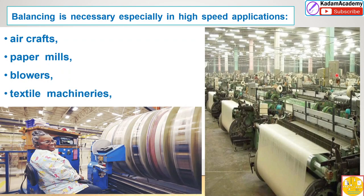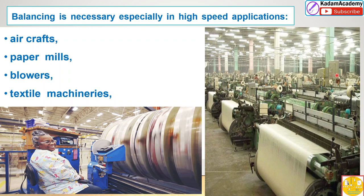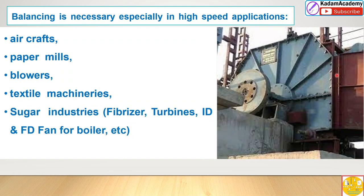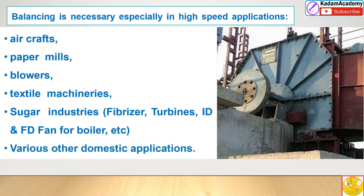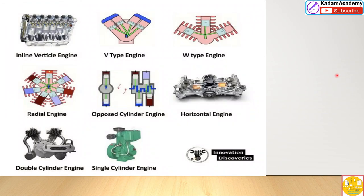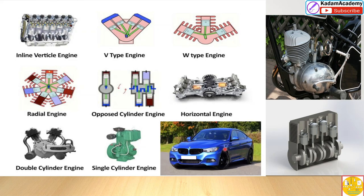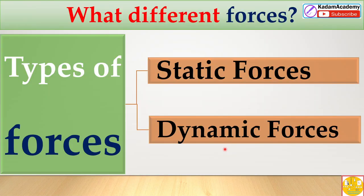Pepper mills, blowers, and textile machines also require balancing as they have rotating and reciprocating parts. In the sugar industry, fiberizer turbines also require balancing. Various domestic applications include inline, vertical, and V-type engines used in two-wheelers and four-wheelers.